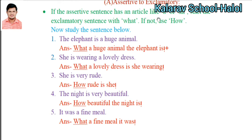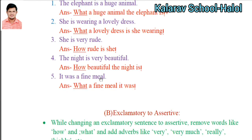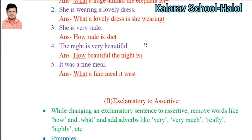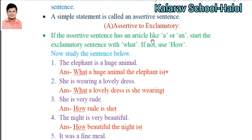Remember the rule: if the article 'a' or 'an' is there in the sentence, you make the exclamatory sentence with 'what'; if not, use 'how.' For example: 'It was a fine meal' — article 'a' is there — 'What a fine meal it was!' Exclamatory mark should be put at the end.